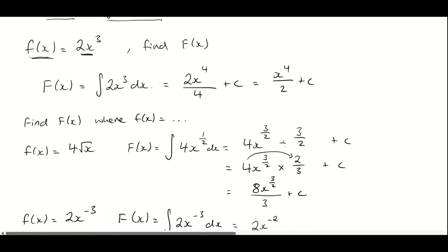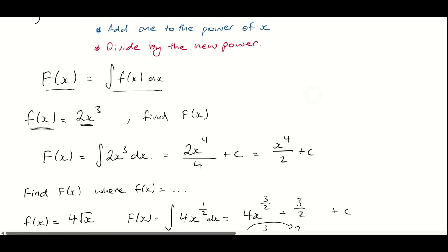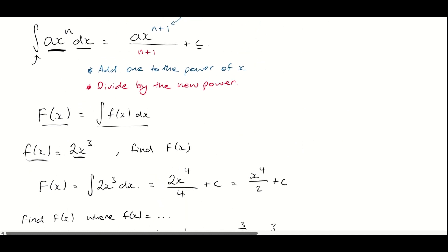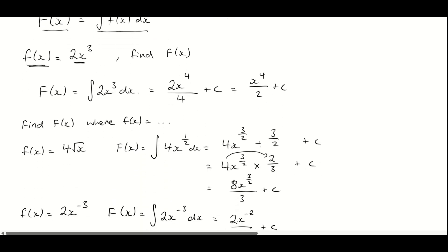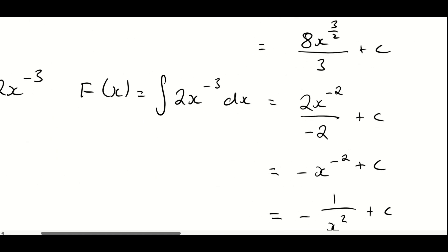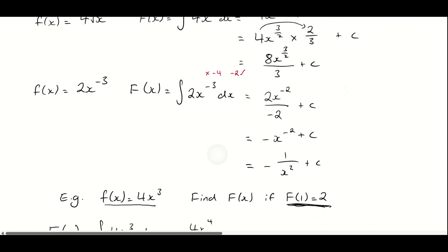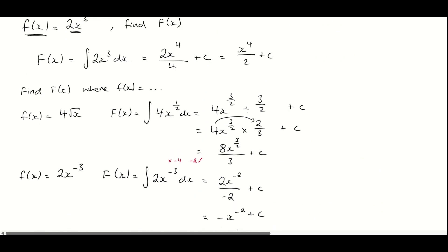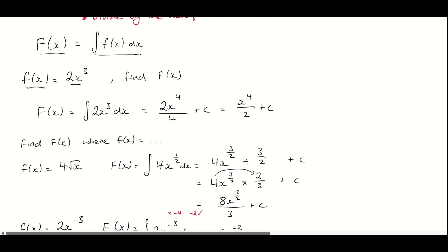That's pretty much it for the examples surrounding anti-differentiating functions in the AX to the power of N form. Always remember the plus C — it's so important and it's where a lot of people will lose marks. And always remember that if you're adding 1 to the power of a negative number, it does not become minus 4; it becomes minus 2. We have to move the correct way along the number line. That's it for AX to the power of N anti-differentiation, and we'll move on to something different in the next video.